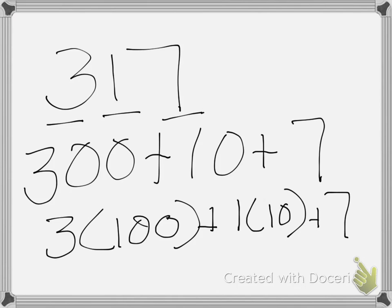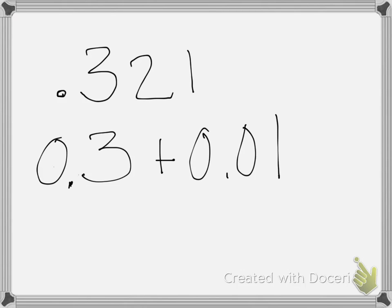Now, you can do the same thing with decimals. If I'm looking at the number 321 thousandths to write it in expanded form, I have 3 tenths plus 2 hundredths plus 1 thousandth.